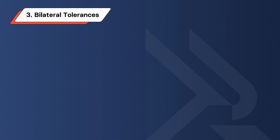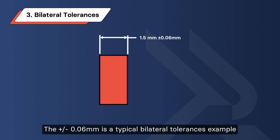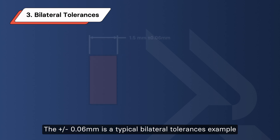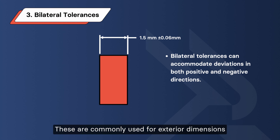Third: Bilateral tolerance. A plus or minus 0.06 mm is a typical bilateral tolerance example. It can accommodate deviations in both positive and negative directions. These are commonly used for exterior dimensions.